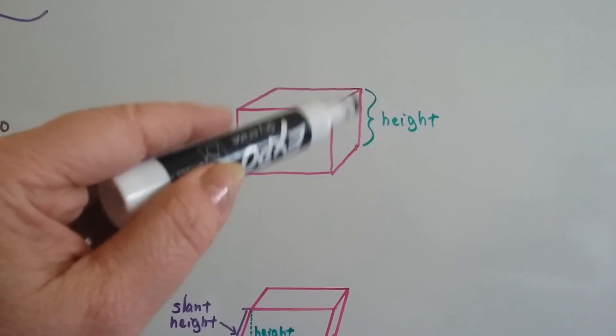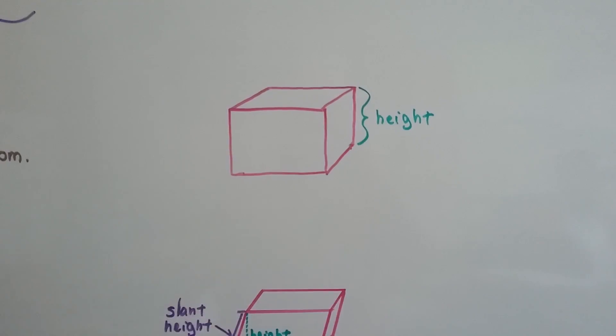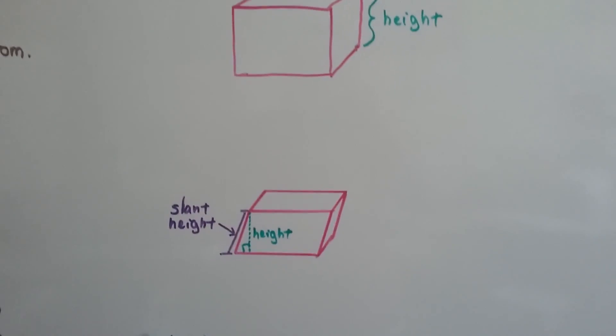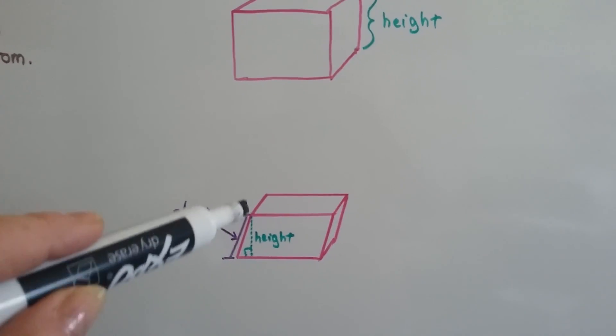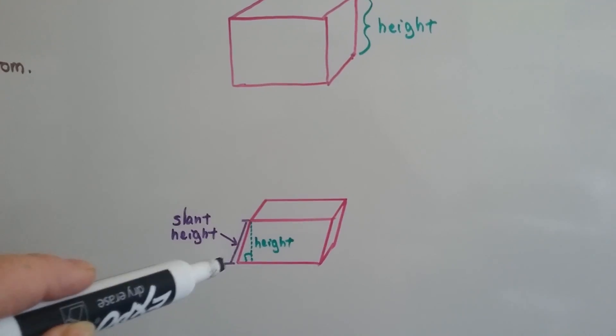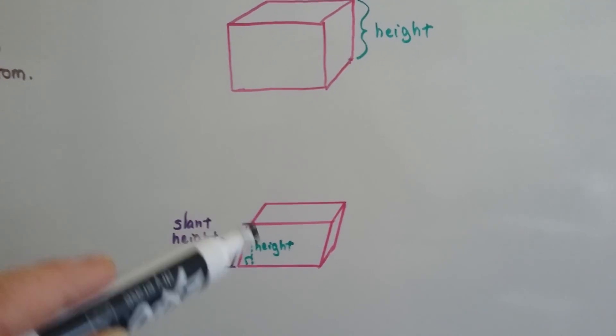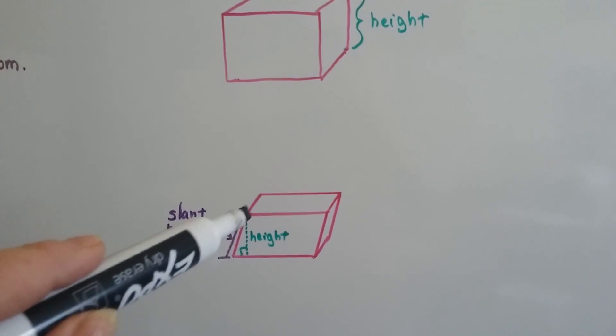So we know that this is the height. We've learned that in grade school, right? And then the slant height would be this outside surface right here, this leaning height. That's not the same as regular height. Slant height is longer than height.